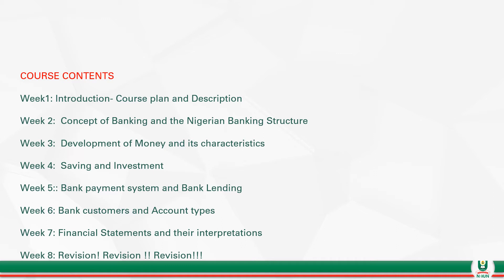Week two, we talked about the concept of banking and the Nigerian banking structure. Week three, we talked about development of money and its characteristics. Week four, we talked about savings and investment. And week five was dedicated to bank payment system and bank lending. Week six, we discussed bank customers and account types. And week seven, we talked about financial statements and their interpretation. Finally, today is dedicated to revision. That's the last topic and we are happy to have it here.